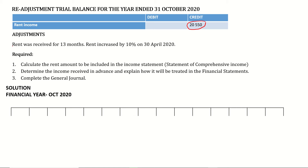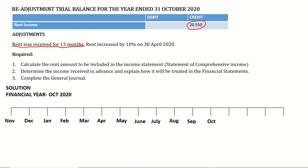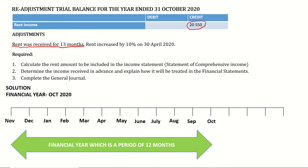In this example, the pre-adjustment trial balance for the year ending 31st October 2020 shows rent income of R20,550. However, rent was received for 13 months, so this amount is incorrect — it needs to represent rent for 12 months ending 31st October 2020. Our financial year starts on the 1st of November and ends on the 31st of October — that is 12 months — but this rent was received for 13 months.